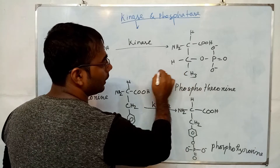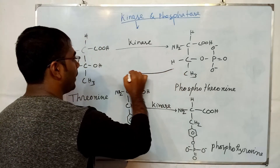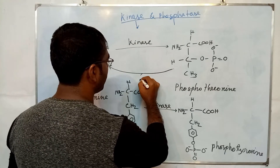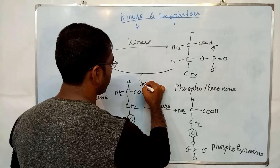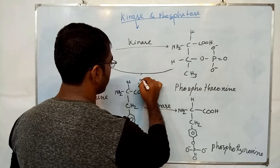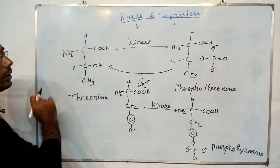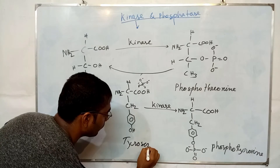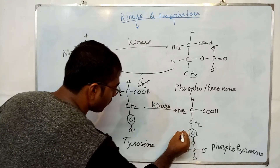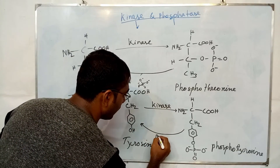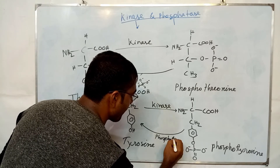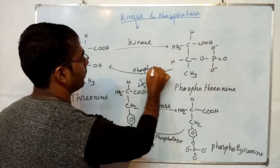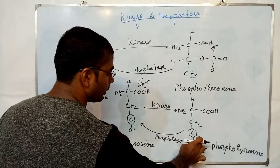When the phosphatase enzyme acts on phosphothreonine, it removes the phosphate group and converts it back into a threonine molecule. Similarly, in the case of tyrosine, the phosphatase enzyme acts on phosphotyrosine and converts it into tyrosine.